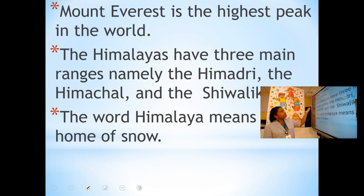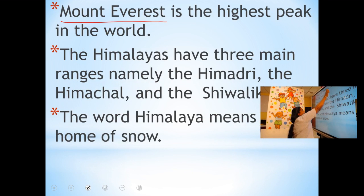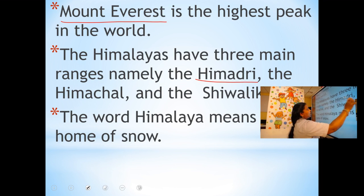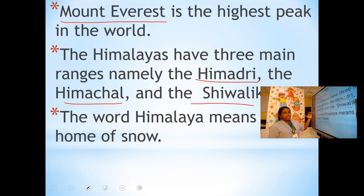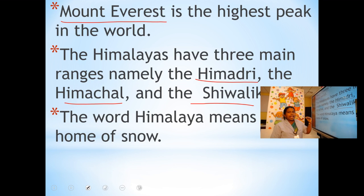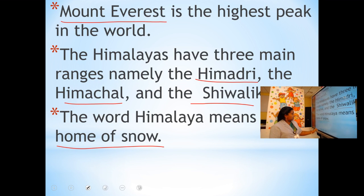Let's revise: Which is the highest peak in the world? Mount Everest is the highest peak in the world. The Himalayas have three main ranges — namely the Himadri, the Himachal, and the Shivalik. The word Himalaya means 'the home of snow.'